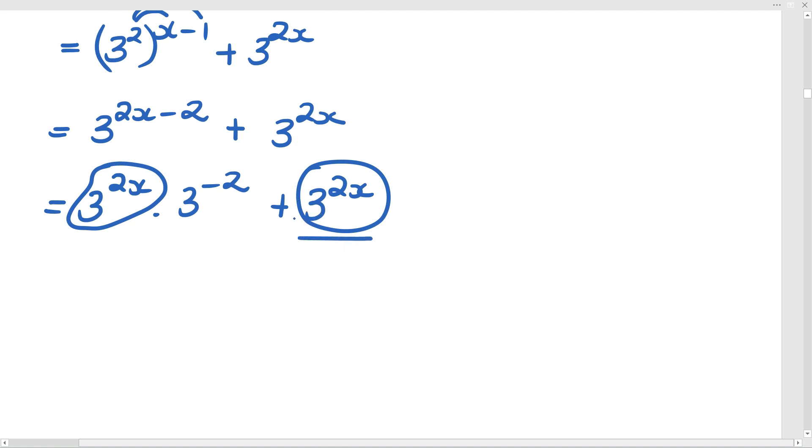When you take out the whole thing, when the highest common factor is in fact one of the terms in the expression, then your leftover is a 1. And that can sometimes be confusing. So I'm taking out a 3 to the 2x. I'm left with 3 to the negative 2 plus whatever multiplies to get this back, which in this case is just 1. Remember that 1. Let's tidy that up. That is 3 to the 2x.